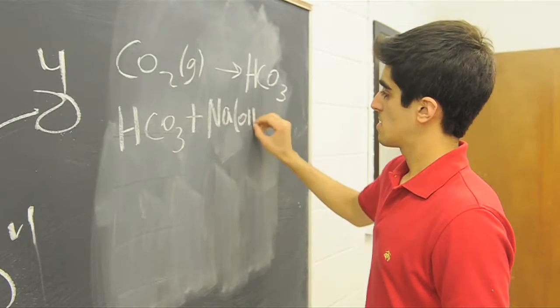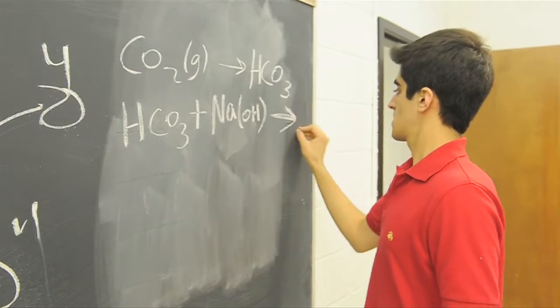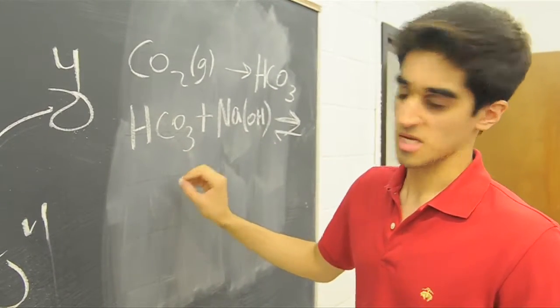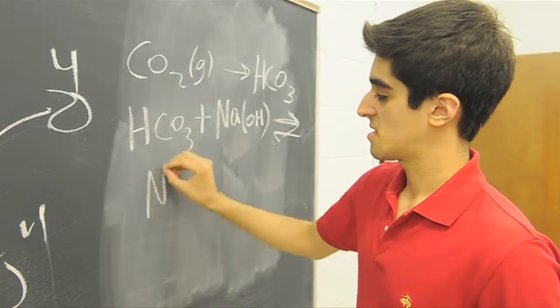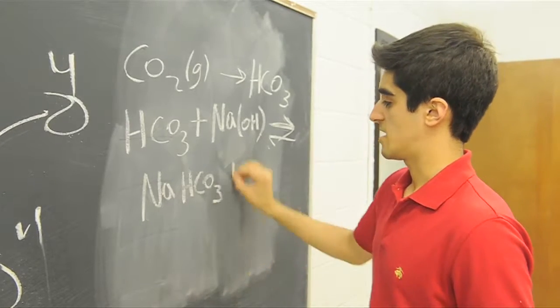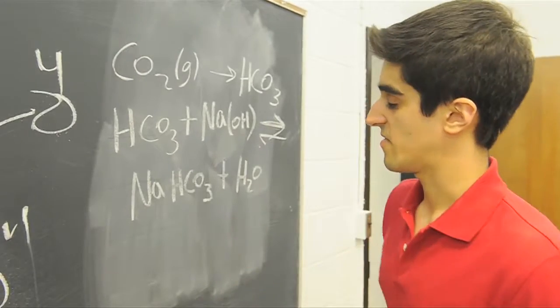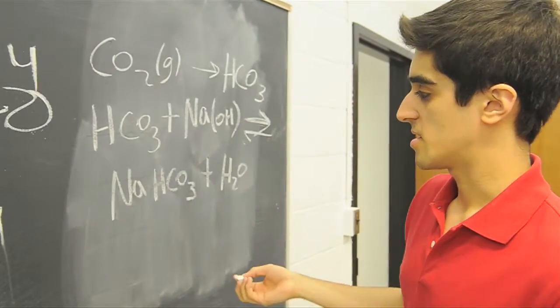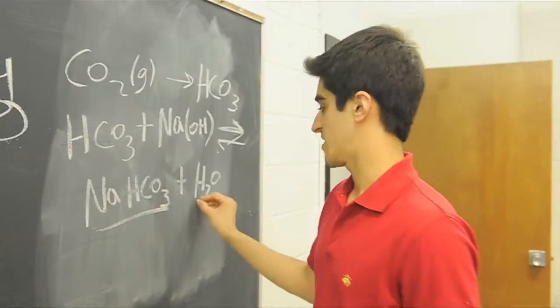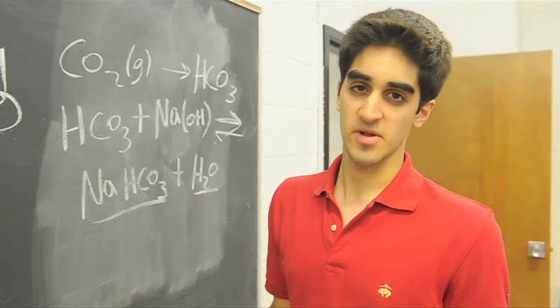Which then would yield sodium bicarbonate, which is completely neutral, which is NaHCO3, and water. So the reactions of the device create products that are completely neutral with sodium bicarbonate and a little bit of water vapor that comes through the system, which is aside from what takes place with photosynthesis.